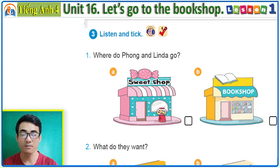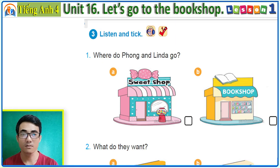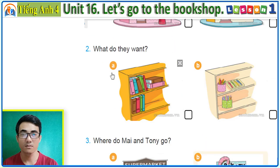Page 41, Activity 3: listen and tick. 1. 'Hi Four, where are you going?' 'I'm going to the bookshop. I want to buy some books.' 2. 'Oh, I want to buy some books too. Okay, let's go to the bookshop together.'